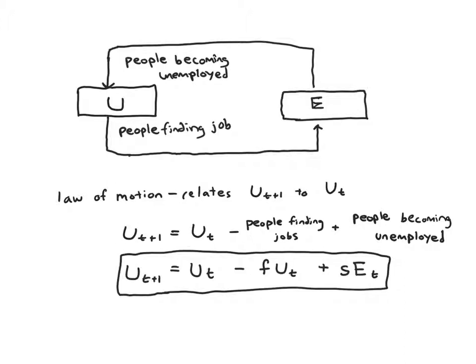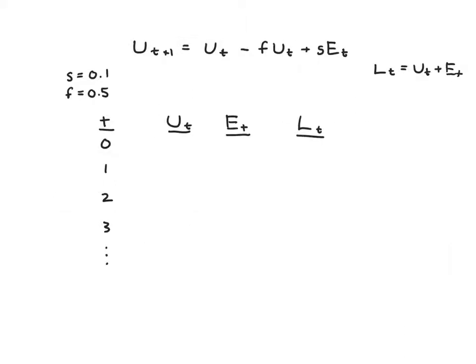Now you might say to yourself, don't we have two key variables, two endogenous variables? We have Ut and Et. If we have a law of motion for Ut, don't we need one for Et? And the answer is sort of. But as you'll see on the next page, if we keep track of Ut, that gives us enough information to find Et. So we could set up a law of motion for Et, but it really would be extra work that we don't really need to do.